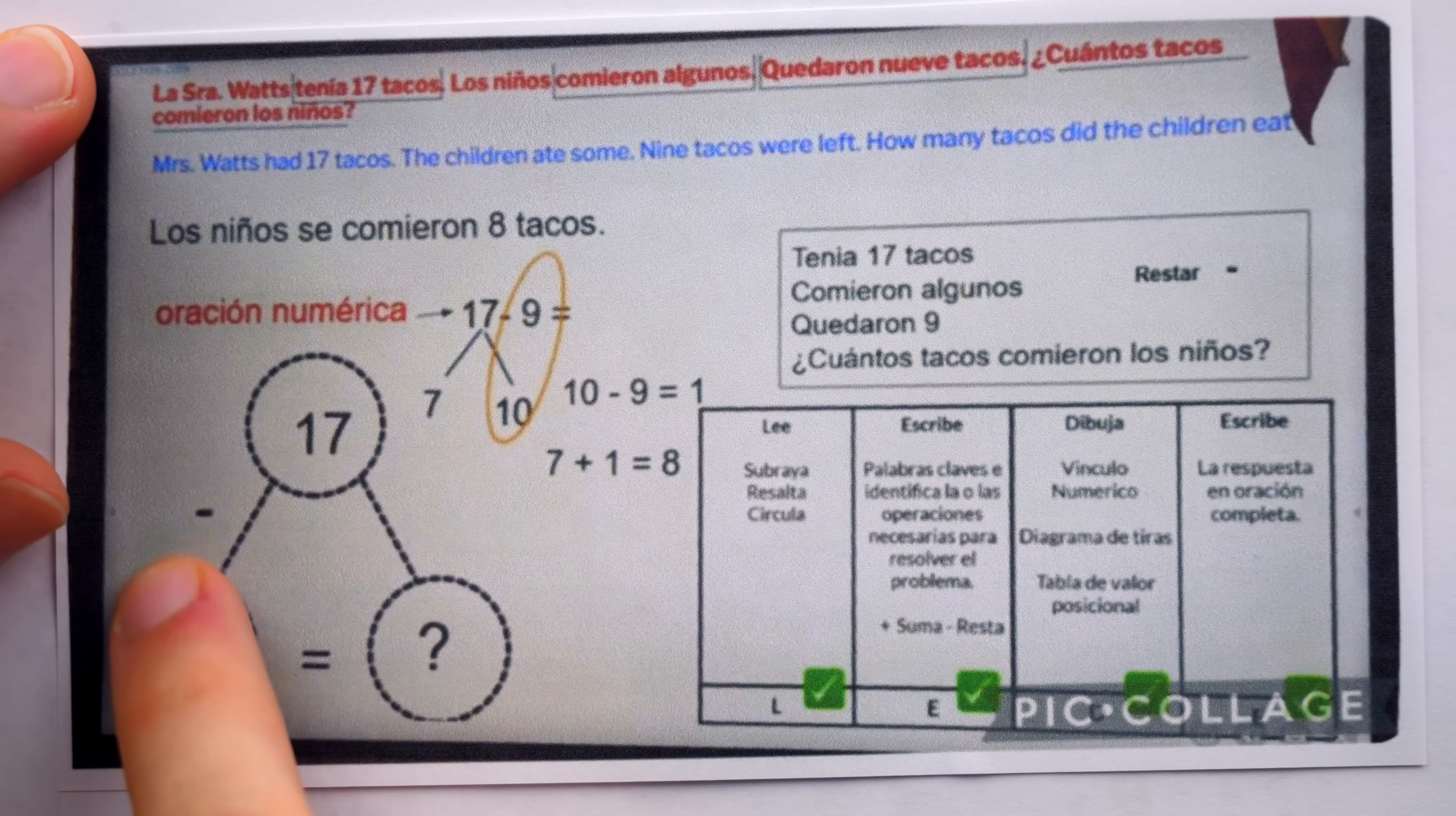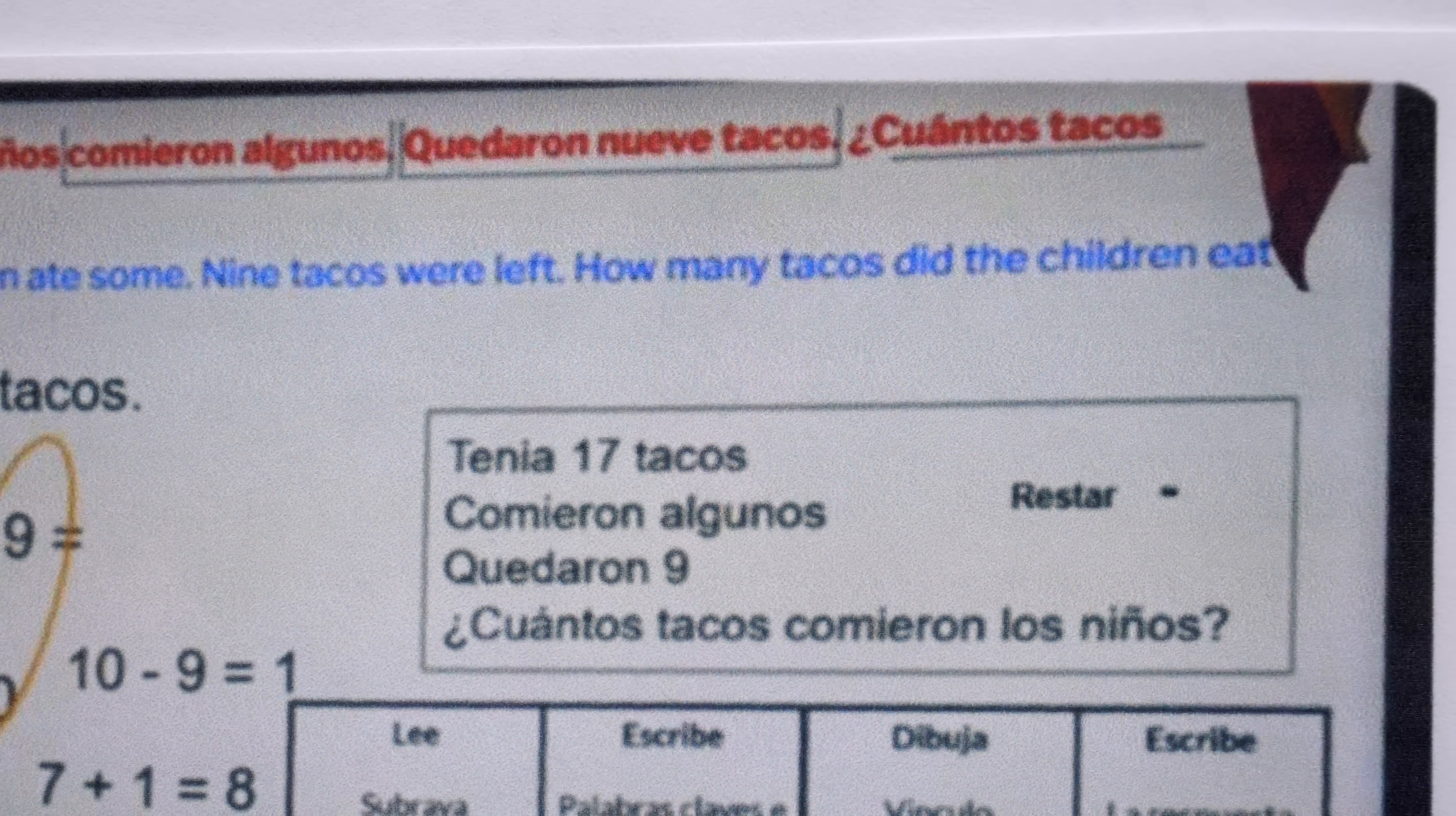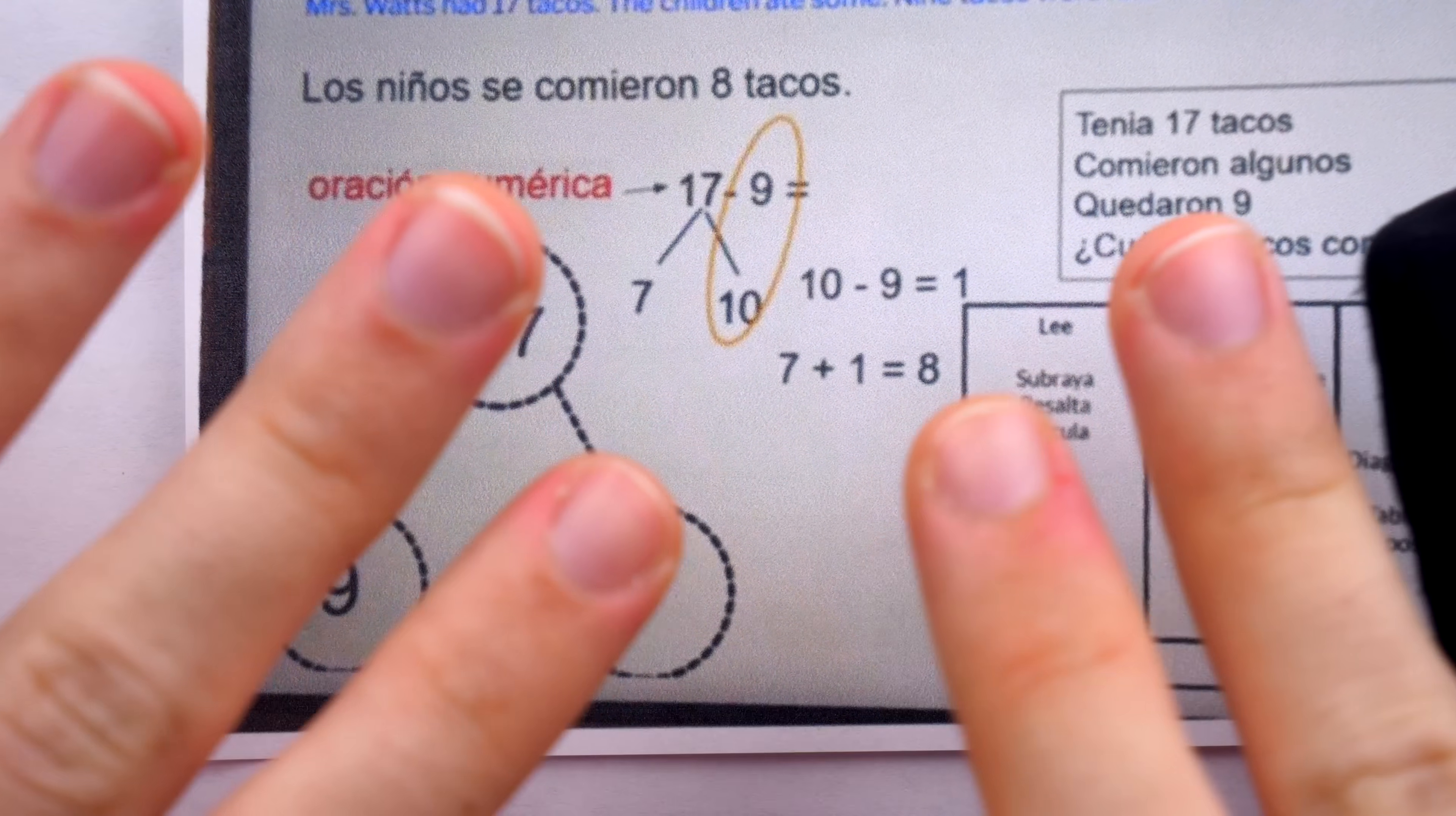It seems this is just showing the diagram method that students are being taught in the context of a word problem, which is translated to English here. It says that Mrs. Watts had seventeen tacos, the children ate some, nine tacos are left, how many tacos did the children eat? Down here are just some general guidelines for solving a word problem correctly and completely. And that seems a little out of place since the worksheet didn't seem to concern word problems. But then the demonstration of the solution method over here seems so out of place that I could eat a horse. Let me explain.